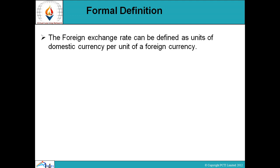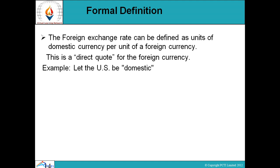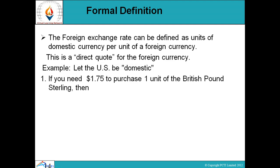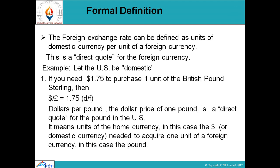Formal definition: the foreign exchange rate can be defined as units of domestic currency per unit of a foreign currency — this is a direct quote for the foreign currency. For example, let the US be domestic. If you need $1.75 to purchase one unit of British pound sterling, then dollar per pound equals 1.75 dollars per pound. The dollar price of one pound is a direct quote for the pound in the US — it means units of the home currency needed to acquire one unit of foreign currency.